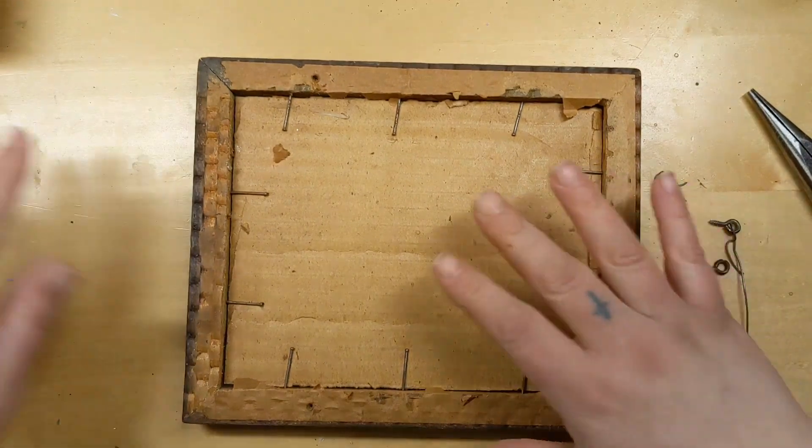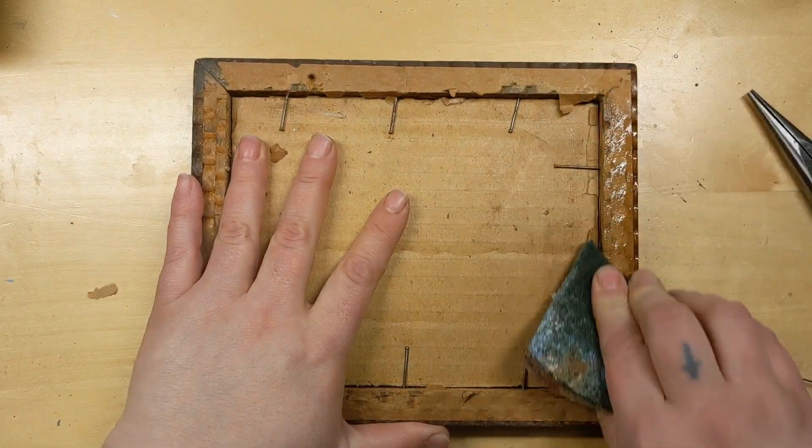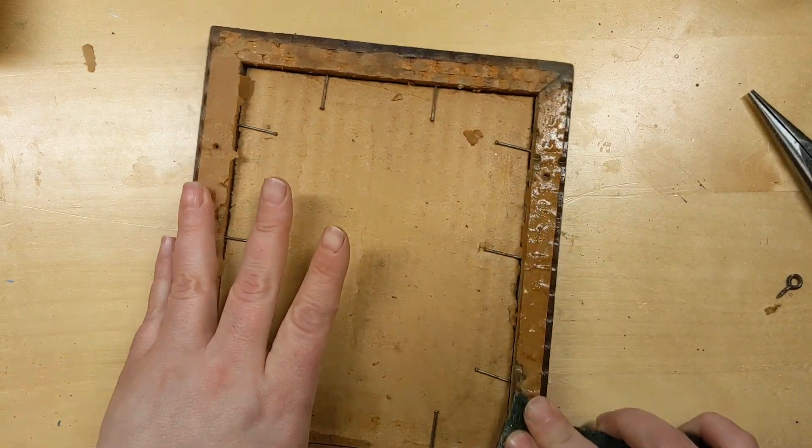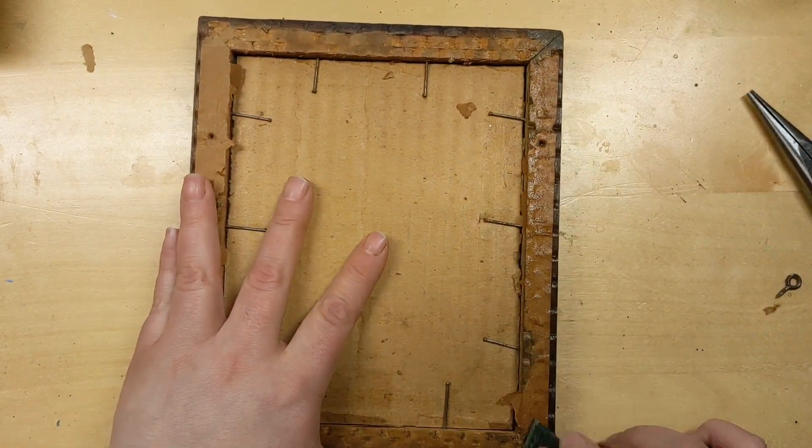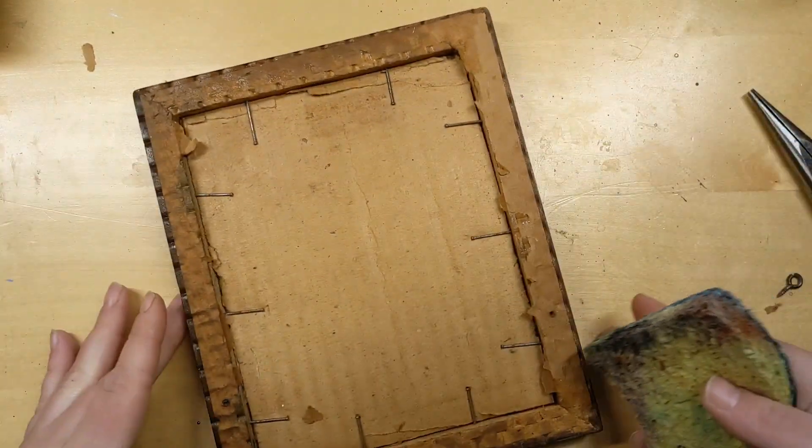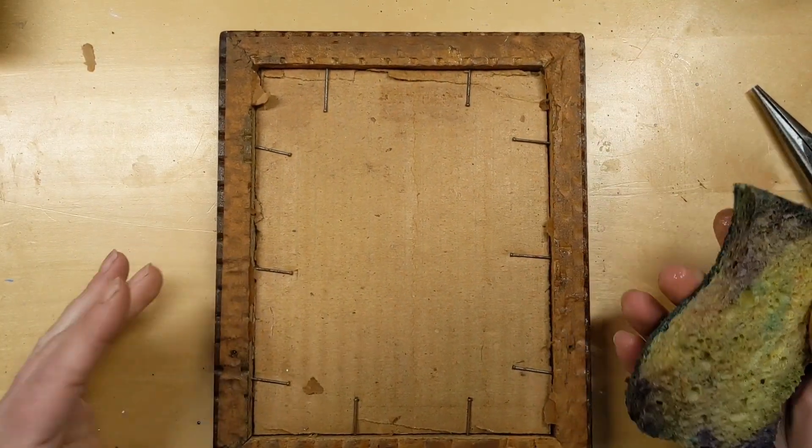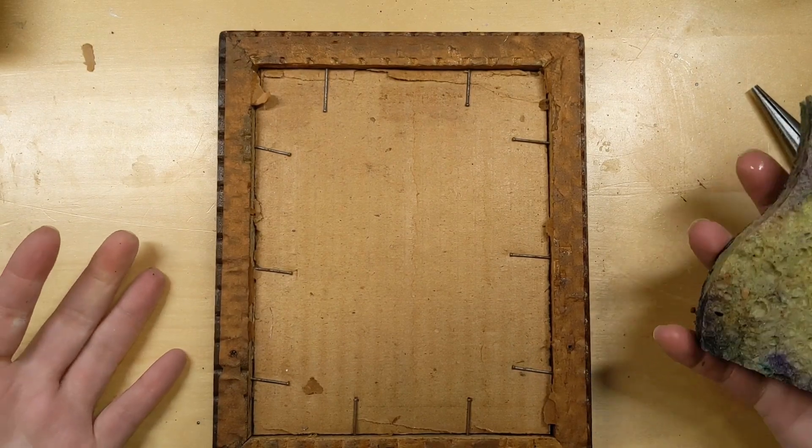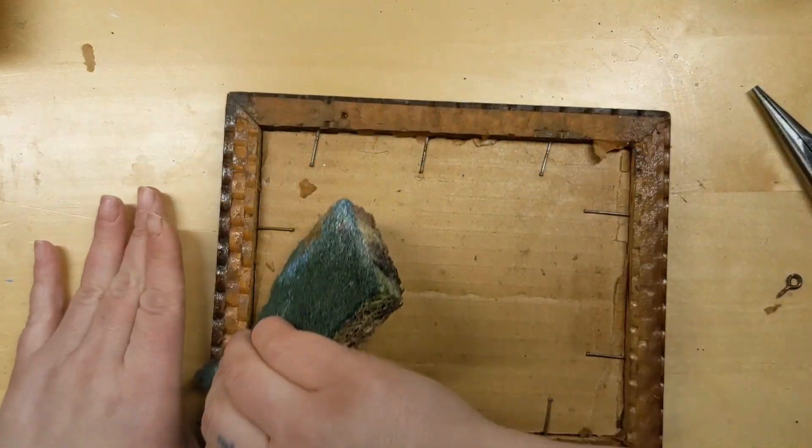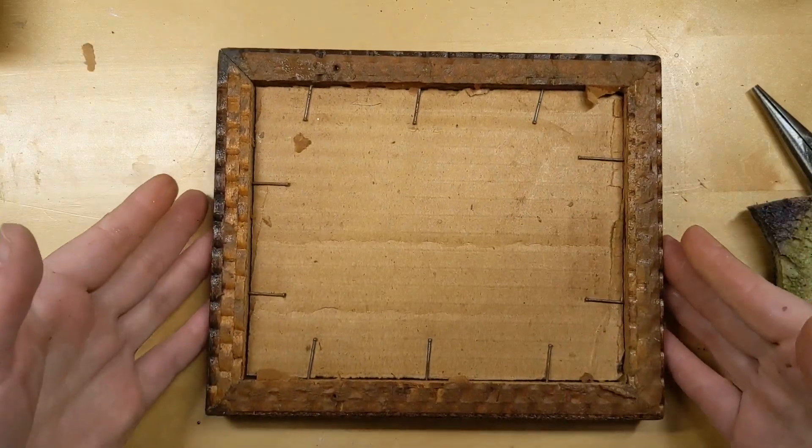When we get to the spot where we are ready to try to get the paper off of the back, I have this wet sponge. And I just get the paper as wet as I can. And then I let it sit. For those of us who lack patience, it might be good to have a few different frames you can work on. Because it's really good to just let the paper sit and soak for a minute. This glue is probably pretty old. So it's probably not going to hold very well once it's wet. So we're going to let that sit and we're going to work on another frame.